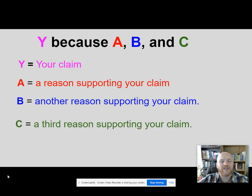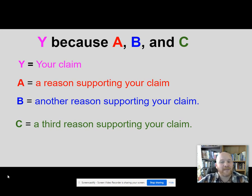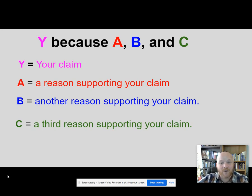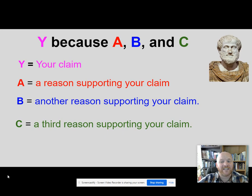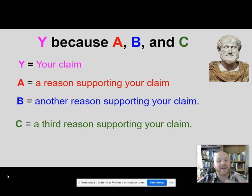So why are we using three reasons? There's a claim and three reasons — why not five or ten? This is the way thesis statements are usually written at American colleges and European colleges too. This form of argument actually organizes itself into the five paragraph essay, and the form goes back thousands of years to the Greek philosopher Aristotle. Aristotle believed that the most convincing arguments would use the three most powerful examples to support a claim.